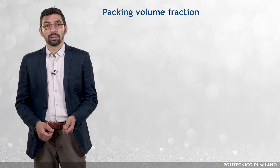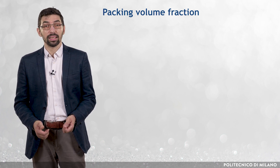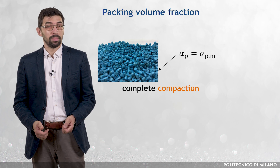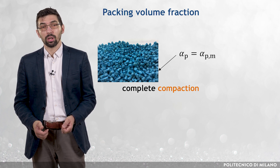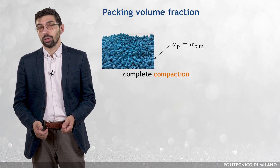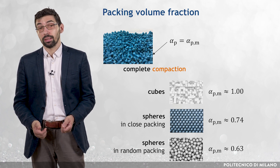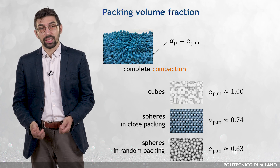The last characteristic of the dispersed phase discussed in this lesson is the maximum packing volume fraction, called α_pm, which refers to the limiting condition of complete compaction of particles. α_pm depends on the particle size distribution and particle shape, and estimates can be obtained for regular geometries. For instance, for packed cubes α_pm equals 1, whereas for spheres in close packing it is 0.74. However, if the spheres are randomly packed, then α_pm reaches only about 0.63.